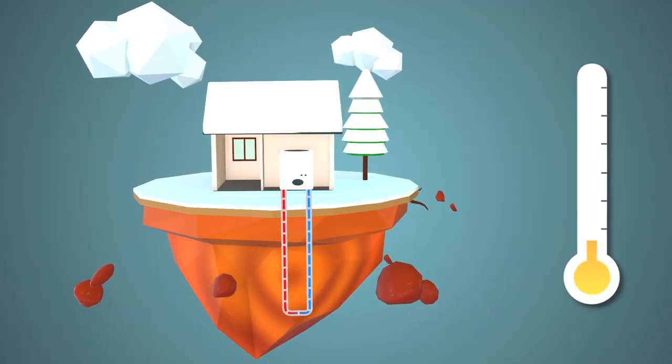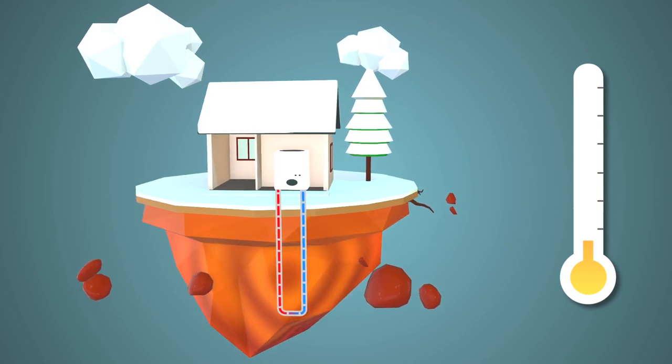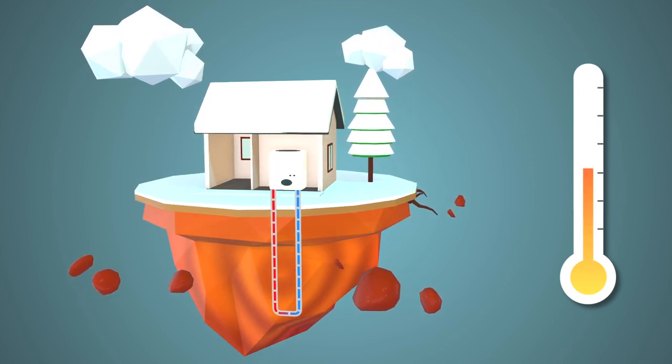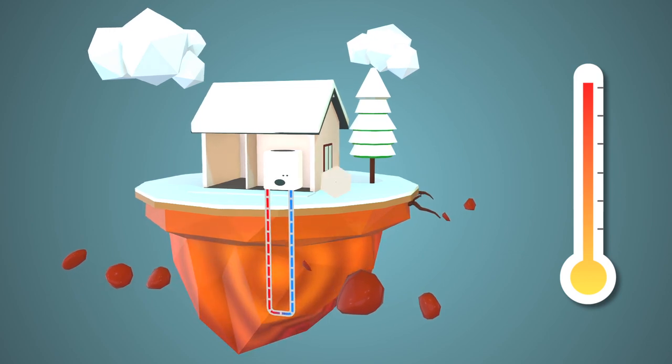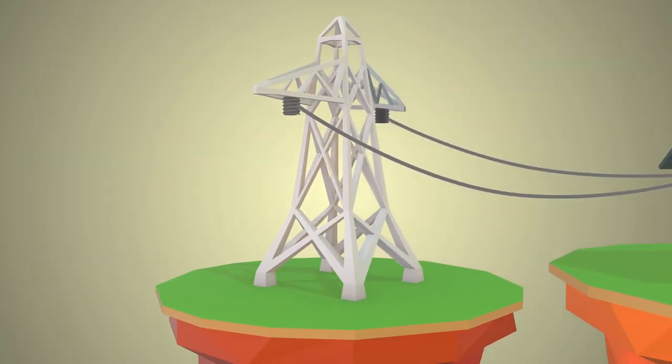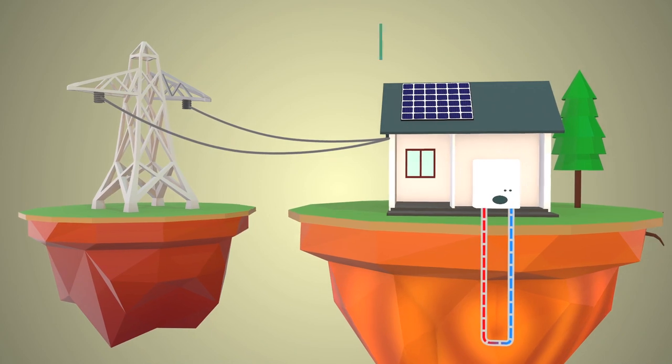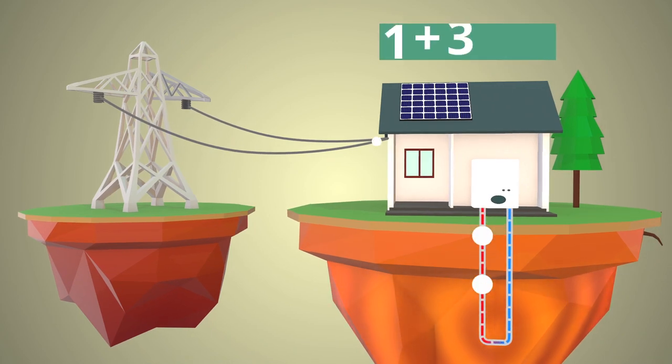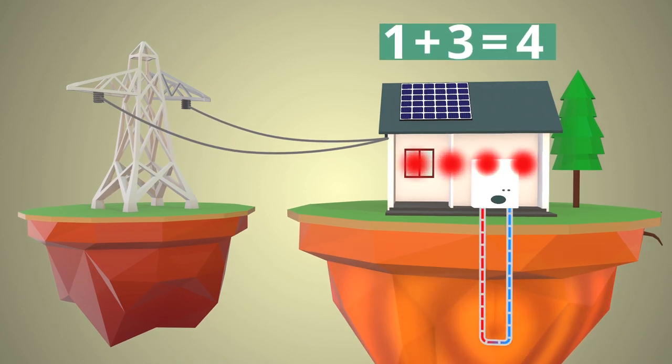In winter, when heat is needed, a heat pump can increase the temperature to 30, 40, or even up to 60 degrees by using compression. To make it work, only a small amount of electricity is needed. One unit of electricity can provide approximately four units of heat energy.